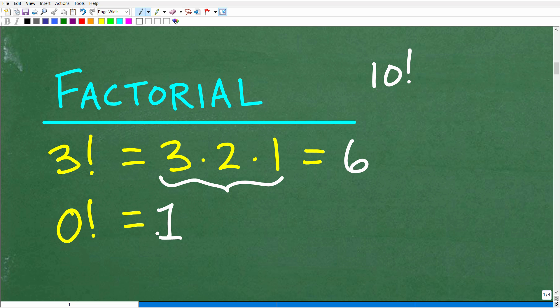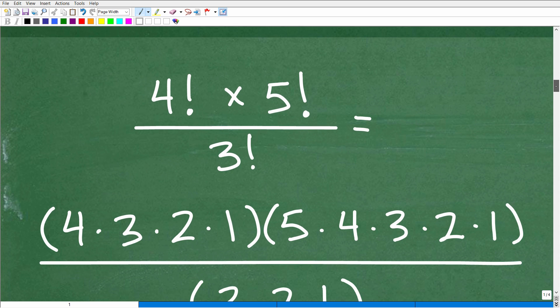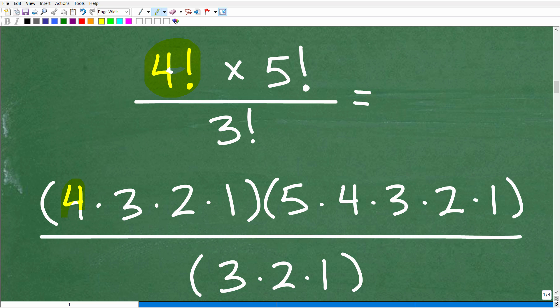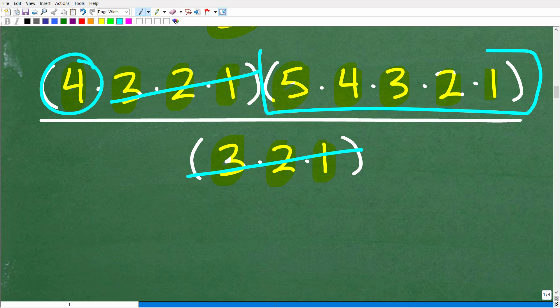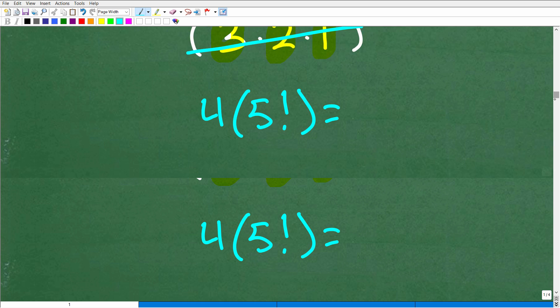So if you understand these things, then you should be able to do a problem like this. Here we have four factorial. That means four times three times two times one. Here I have five factorial. That's going to be five times four times three times two times one. And then three factorial is going to be three times two times one. Now you can see there's all sorts of opportunities to cross-cancel. We have three times two times one, three times two times one. We can cross-cancel like factors. So we're going to end up with four times this right here, and this right here is five factorial. So really, all this is going to be equal to four times five factorial. And then we'll have to do the number crunching there to get the final answer.